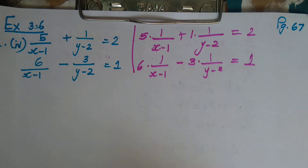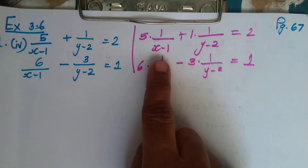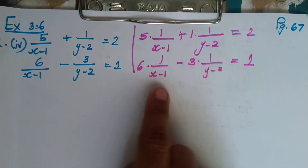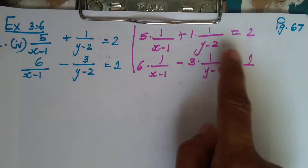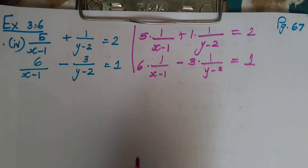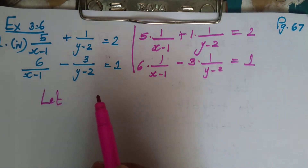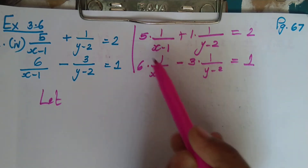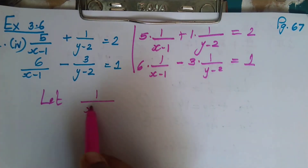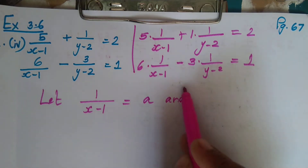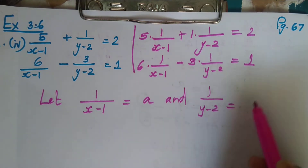So 5 into 1 is 5, giving 5/(x-1). And 1 into 1 is 1, giving 1/(y-2). Similarly, 6 into 1 is 6, giving 6/(x-1), and 3 into 1 is 3, giving 3/(y-2). Now let 1/(x-1) equal to a and 1/(y-2) equal to b.